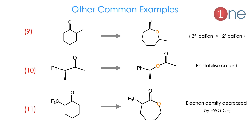Example 9: a ketone with methyl on one side and hydrogen on the other — oxygen insertion occurs at the more substituted carbon because the tertiary cation is stable. Example 10: one side methyl, other side phenyl — oxidation happens on the phenyl side because the cation is stabilized by the phenyl group.